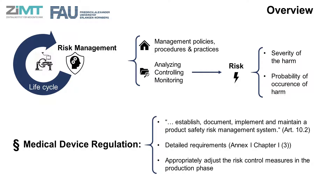The Medical Device Regulation (MDR) outlines in Article 10.2 that manufacturers are required to establish, document, implement, and maintain a product safety risk management system. The detailed requirements of what the risk management system will cover are listed in Annex 1, Chapter 1-3 of the MDR. In addition to this, the MDR outlines that in the production phase, manufacturers must evaluate the impact of any new information and, if needed, adjust the risk control measures appropriately.